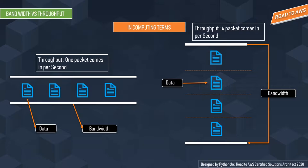Bandwidth doesn't guarantee greater or faster speed unless there is a huge amount of data being pushed into the pipeline. You might have 100 Gbps bandwidth but not get 100 Gbps internet speed. If you increase the bandwidth, you have a better chance of getting better speed because the amount of data that can be pushed substantially increases. Throughput is the actual amount of data that can be transferred through the network.